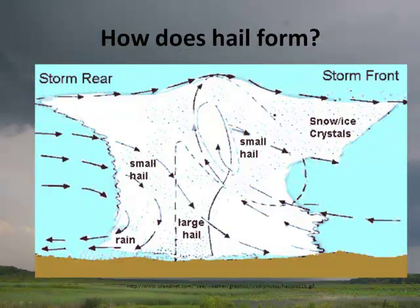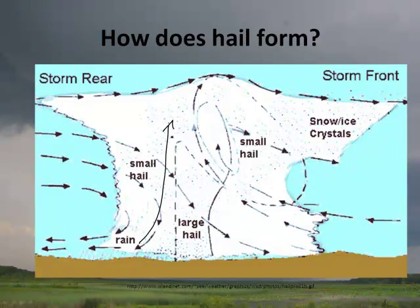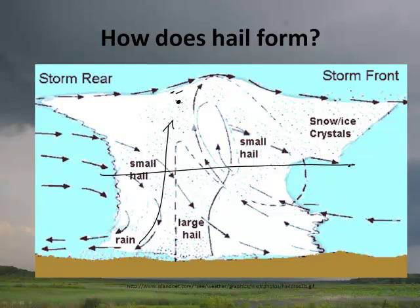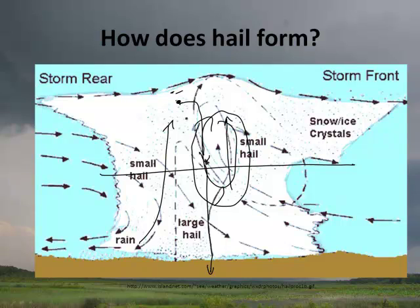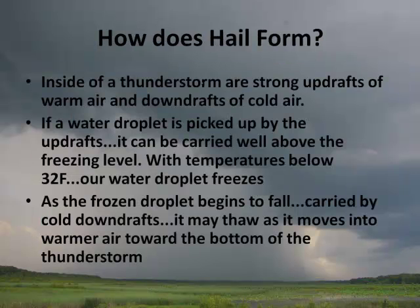Now, where does hail come from? You get these updrafts from convection, and they carry moisture up. Above a certain point it's below freezing, so a little ice crystal forms. It falls back down — if it hits another updraft it gets carried back up, and the crystal gets bigger. It goes up and down, up and down, and the hail gets larger and larger. Eventually its weight overcomes the updraft and it falls to the ground as large-sized hail. So it's: updraft → freeze → fall → possibly melt → another updraft → refreeze → grow bigger.